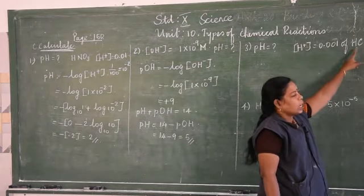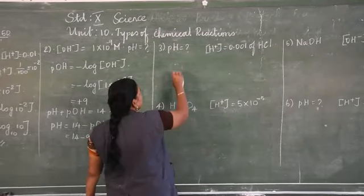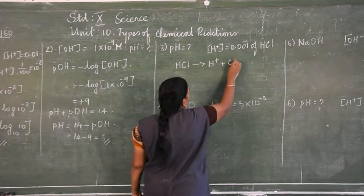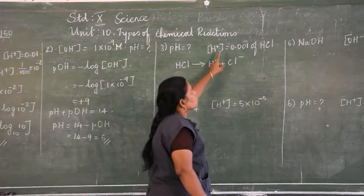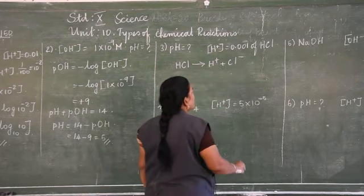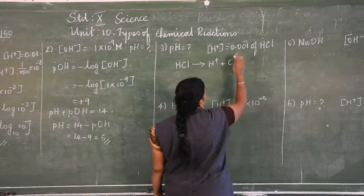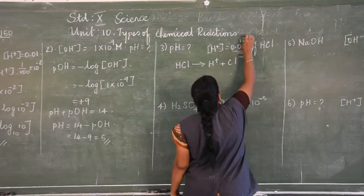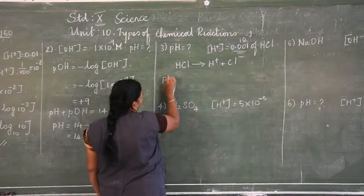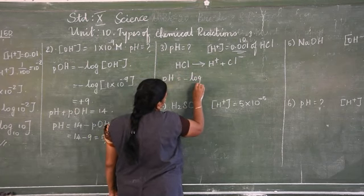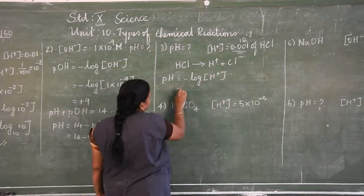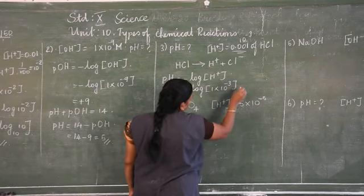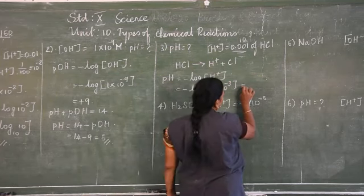Third problem: hydrochloric acid with given concentration 0.001. Hydrochloric acid splits into H⁺ + Cl⁻, so there is only one hydrogen ion. We convert 0.001 = 10⁻³. pH = -log(1 × 10⁻³) = -(-3) = 3. The pH value of hydrochloric acid is 3.